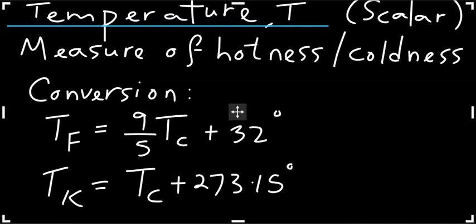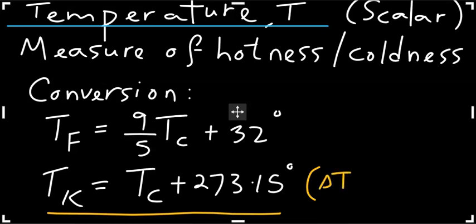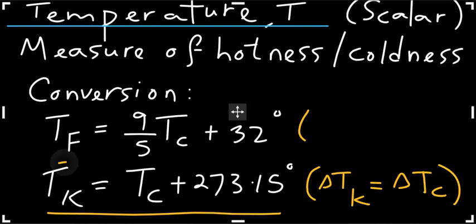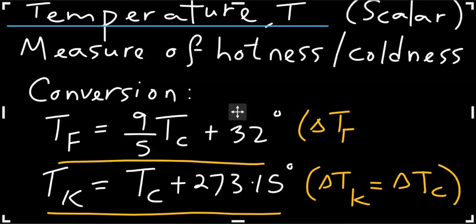An important point we can conclude from these conversions: looking at the Kelvin–Celsius equation, it tells you the size of 1 Kelvin is the same as the size of 1 degree Celsius — the interval of 1 Kelvin equals the interval of 1 Celsius. Likewise, from the Fahrenheit equation, the interval of 1 degree Fahrenheit equals nine-fifths of the interval of 1 degree Celsius.